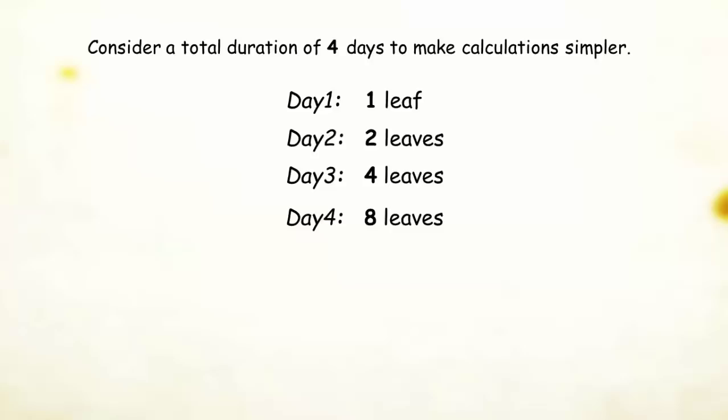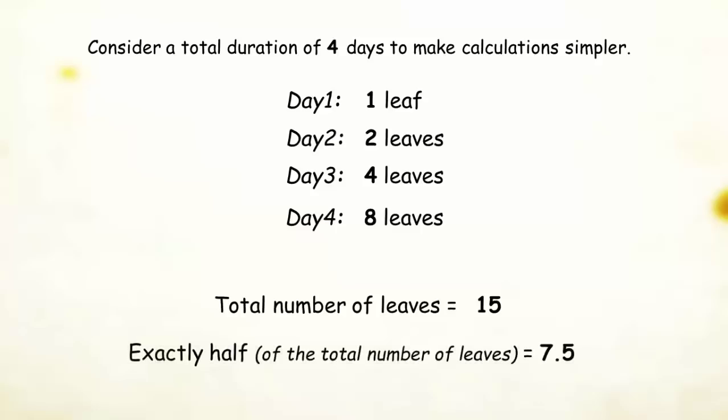So, the total number of leaves is equal to 15 and exactly half of the total number of leaves is equal to 7.5. By the end of day 3, it could only finish seven leaves in total which is less than the exact half value.